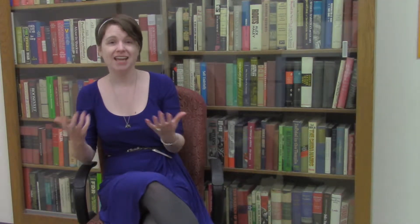I'm also going to show you another example of what that actually looks like in practice. This example comes from a really nice article — and the data that corresponds to it — talking about how when you share your data, the citation counts on your articles go up. You can see in this example it has those five key elements, and even in the title it says it's data from this particular paper.